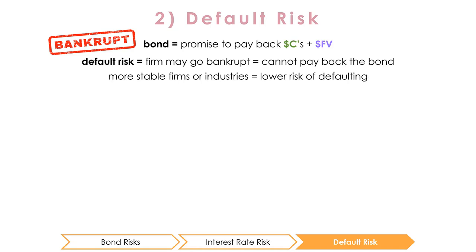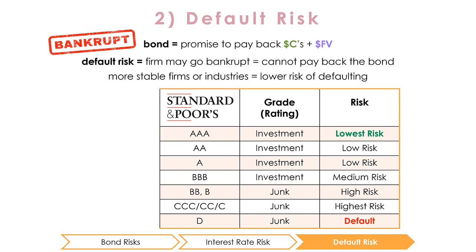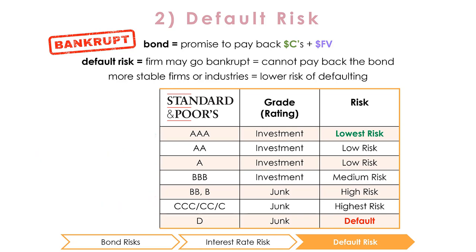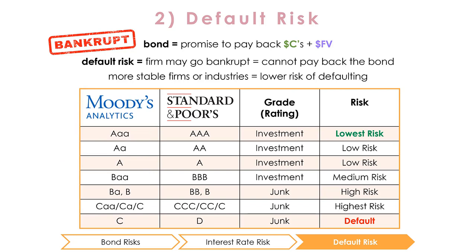Bond rating agencies help investors evaluate the default risk of government and corporate bonds by assigning them grades. For example, Standard and Poor's rates bonds from AAA to D. High investment grades fall between AAA and BBB. Junk or speculative bonds, which are considered to be high risk, are rated below BBB. Another commonly used grading scale is Moody's.